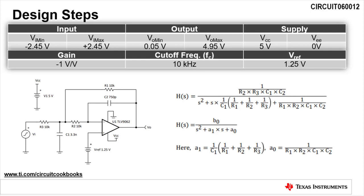As mentioned earlier, the design uses a single 5-volt supply, a 1.25-volt reference, and has a gain of negative 1 volt per volt. The desired cutoff frequency is 10 kilohertz. The transfer function, H(s), and equations for a1 and a0 are given to the right of the schematic.